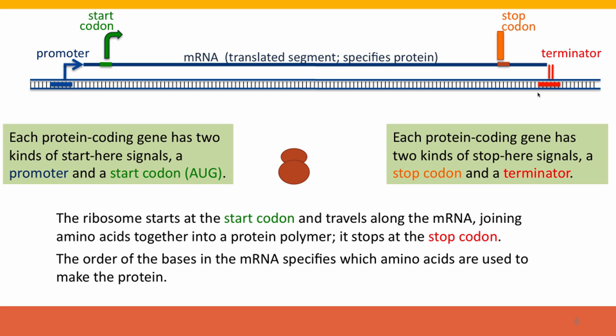Now let's add on to this process the signals that control protein synthesis. So now we have two more signals: another start signal called the start codon, and another stop signal, the stop codon. So each protein coding gene has two start here signals. It has the promoter, which is a signal in the DNA, and it has the start codon, which is a signal that acts in the RNA but in fact is coded also in the DNA. But it's recognized in the RNA by the ribosome, the protein and RNA factory that will synthesize the protein.